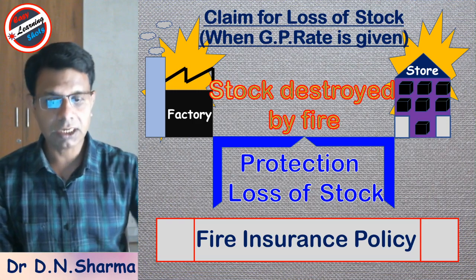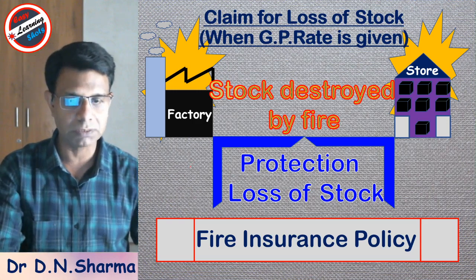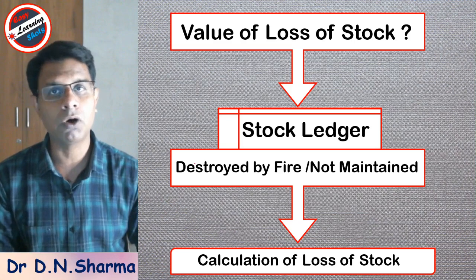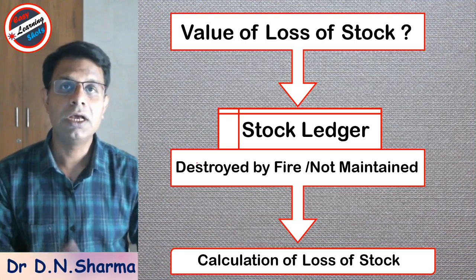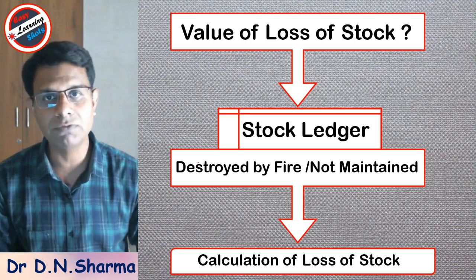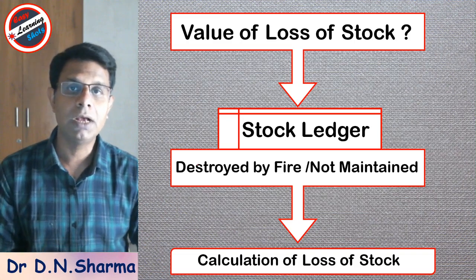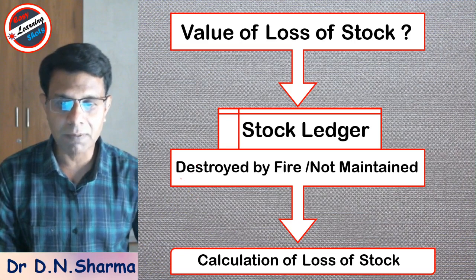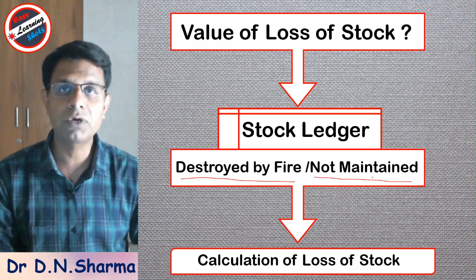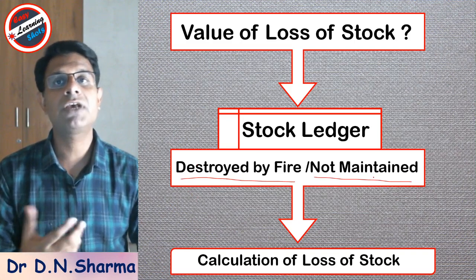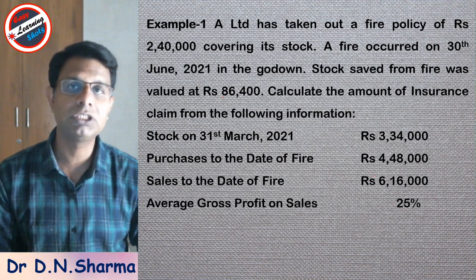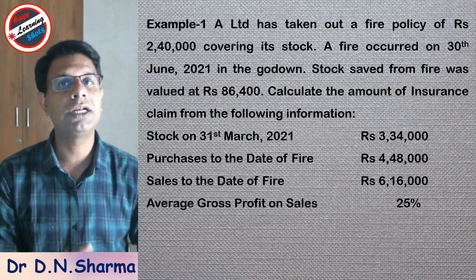When we calculate the loss of stock which was protected by a fire insurance policy, first we have to see whether the stock ledger is maintained by the shopkeeper or store manager, because the stock ledger shows the receipt and issue of material or stock, so we can easily find the value of stock and get the claim from the insurance company. But if the stock ledger is destroyed by fire or not maintained, then we have to calculate the value of stock and afterwards calculate the amount of claim.